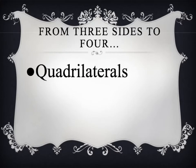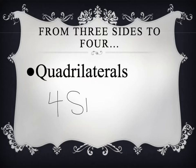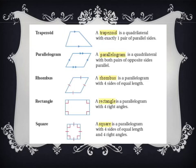Moving from three sides to four: an object or a shape with four sides is called a quadrilateral. Quad means four, so quadrilateral means that there are four sides. Make sure that you know a quadrilateral is a shape with four sides.